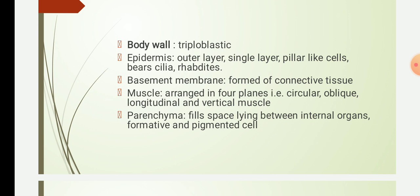The second layer is the basement membrane, which lies below the epidermis and is formed of connective tissues. The muscles are located below the basement membrane. They are arranged in four planes: circular muscle, oblique muscle, longitudinal muscle, and vertical muscle. The circular muscles are arranged in rings around the body, the longitudinal muscles are arranged anteroposteriorly, the oblique muscles are arranged obliquely, and the vertical muscles are arranged between the dorsal and ventral body wall.